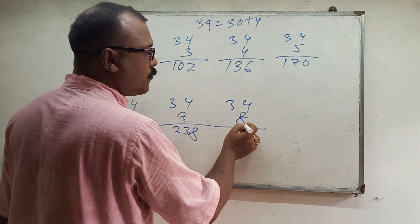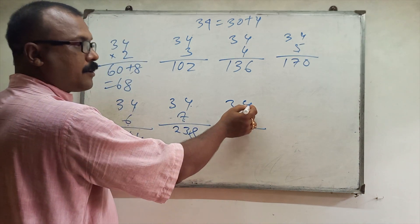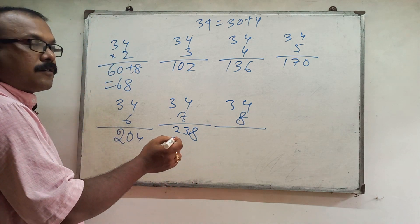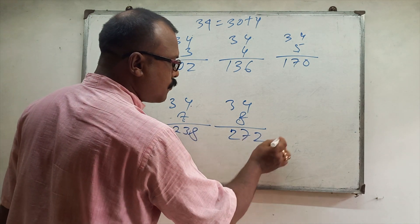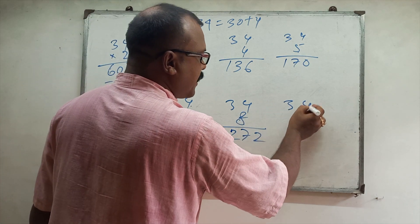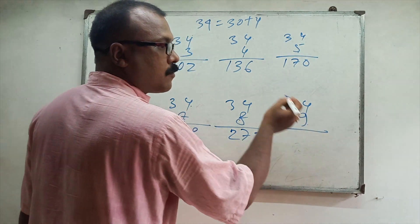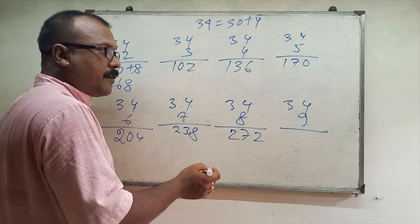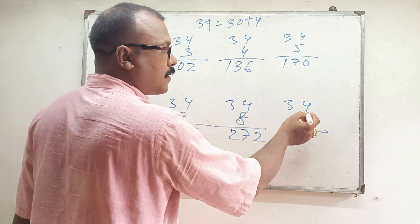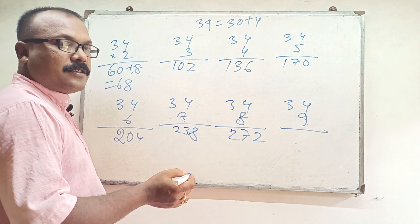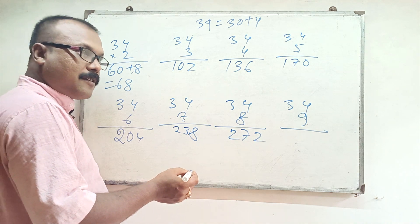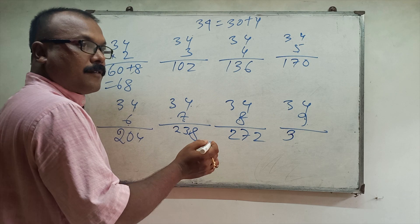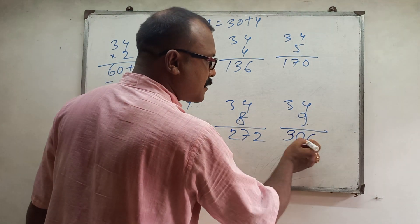34 eights: 240 plus 32, that is 272. 34 nines: 270 plus 36, so 300 plus 6, that is 306. Clear?